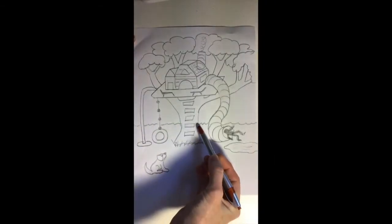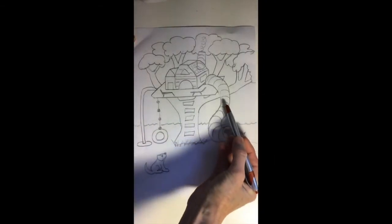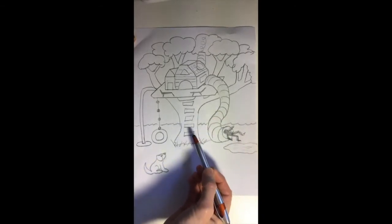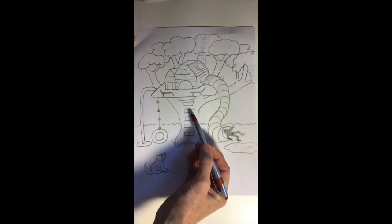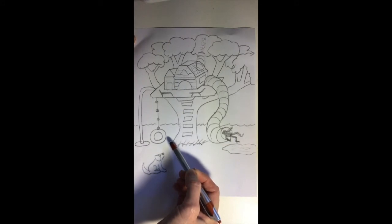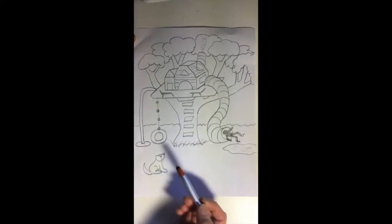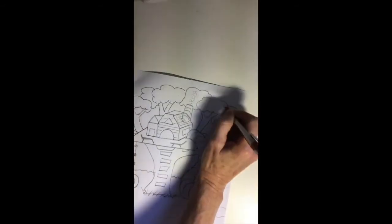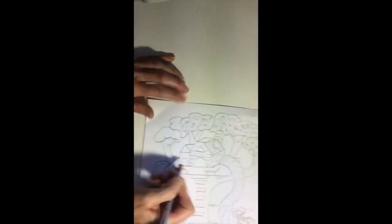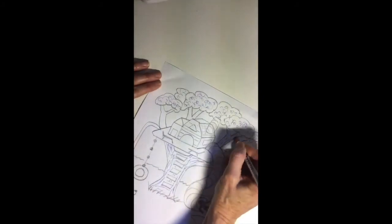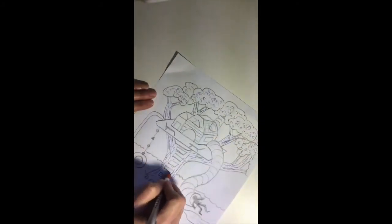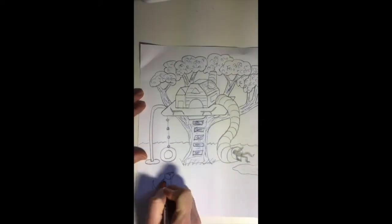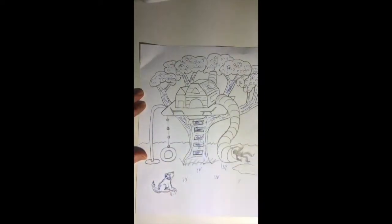The element of line was used to draw the tree and the treehouse. And then the element of shape is all over the place. The circle and the rectangles and even freeform shapes. Now I'm drawing in some texture. And texture is the element that shows how something would feel. So we're making it look leafy and we'll make the tree have some bark texture. I can even make the dog have a furry texture.